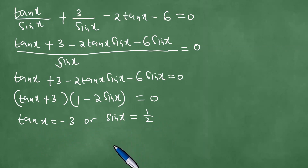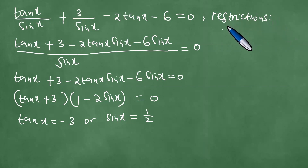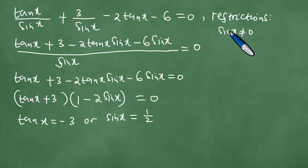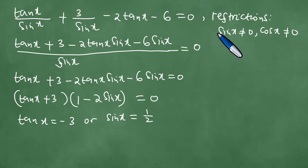As we are solving this, something very important is the notion of restrictions. The sine of x cannot be 0, because if it is 0 then we have division by 0. If sine x is not 0, it means that x is not a multiple of 180 degrees times k.